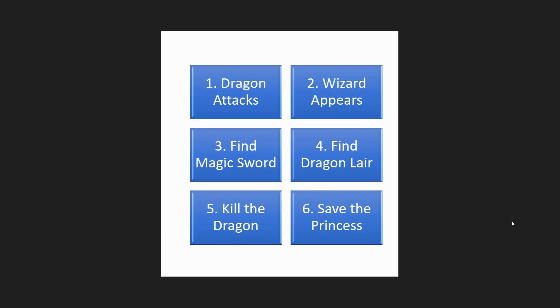Action scenes obviously have a different pacing than a more laid-back, introspective scene. I'm using a really generic, basic fantasy or fairy tale story with these basic plot elements — dragon attacks, a wizard, a princess, a magic sword, and all that sort of thing. The numbers one through six could represent six chapters with the main event in each, or it could be a hundred chapters where these are just the major plot points that have to happen along the way with other chapters interspersed between certain events.